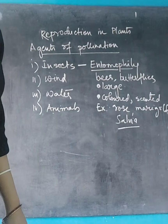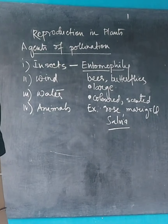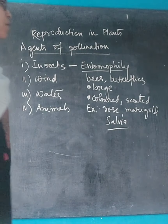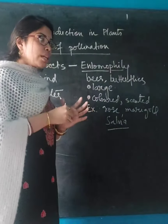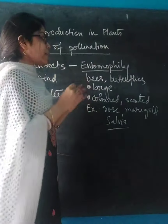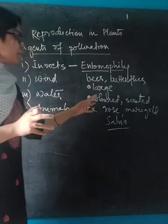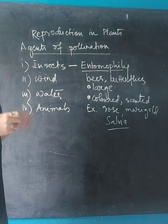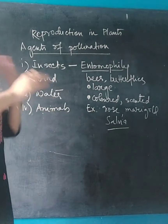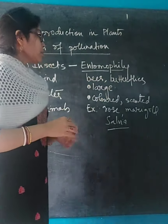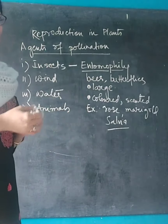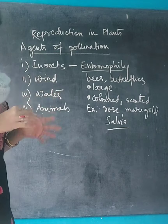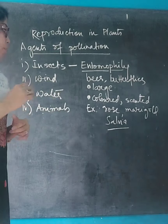Most flowers also produce nectar and a sweet fragrance — for example, night jasmine. The pollen grains are sticky so they can easily get stuck to the body of insects. This is all about entomophily, which is pollination with the help of insects, mainly honeybees and butterflies. These characteristics attract the insects to come and sit on the flower and help in the process of pollination.